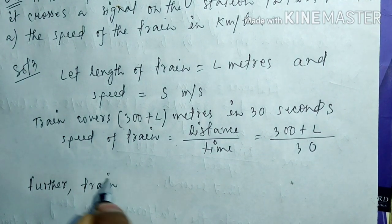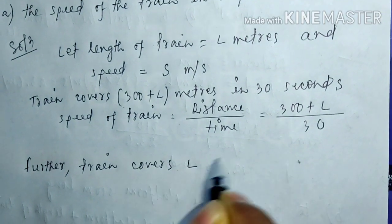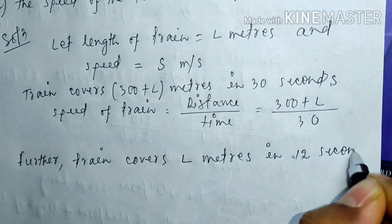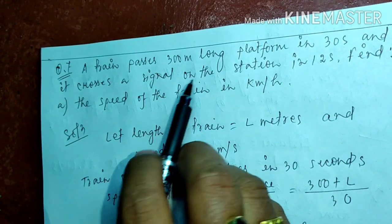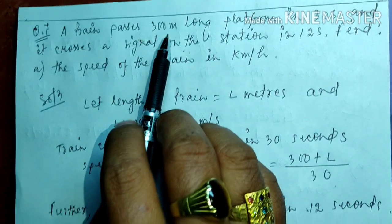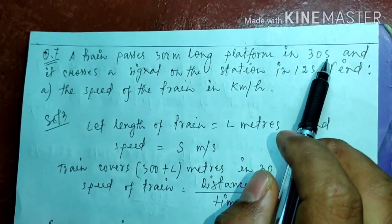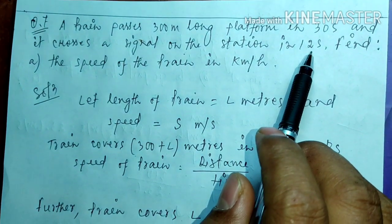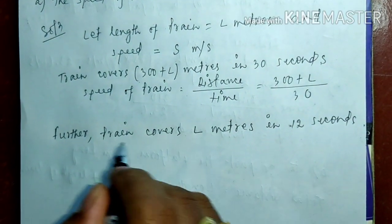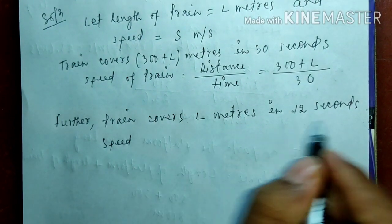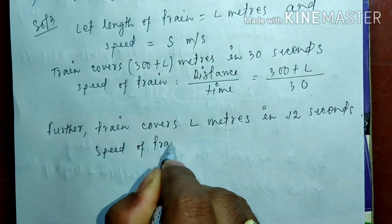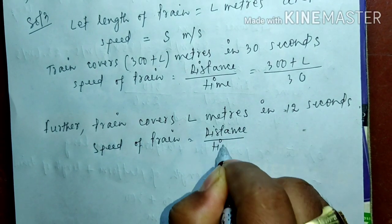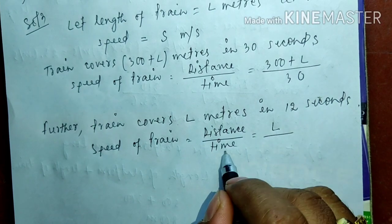The train also covers L meters in 12 seconds. In the question, the train crosses a signal on the station in 12 seconds — to cross a signal, only the train length L needs to be covered. So for that case, speed of train equals distance by time, which is L divided by 12.